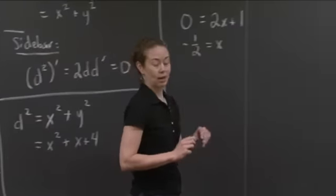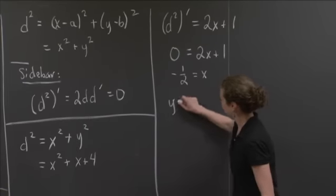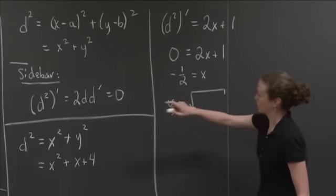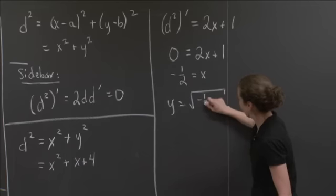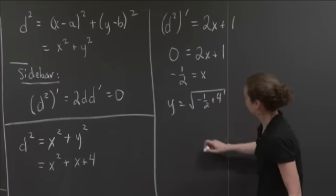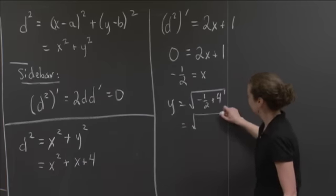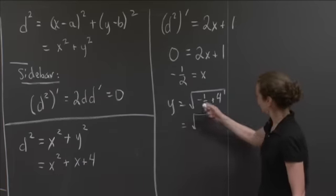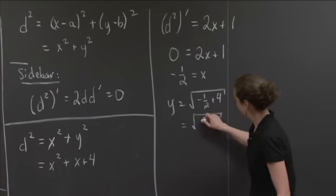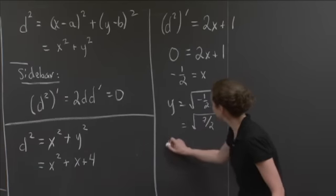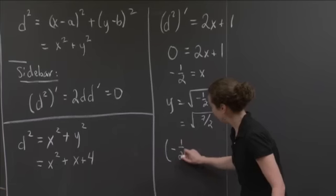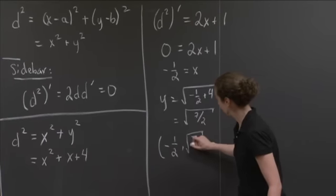Now we have x. So how do we find y? Well, we know what y is. Y is equal to the square root of x plus 4. So it's equal to the square root of negative 1 half plus 4, which simplified is 3 and 1 half, which is 7 halves. So the point is negative 1 half comma square root of 7 halves.